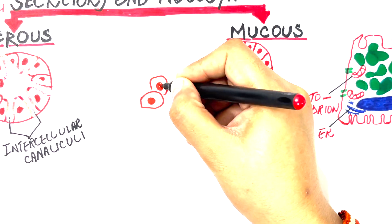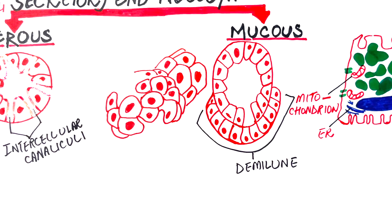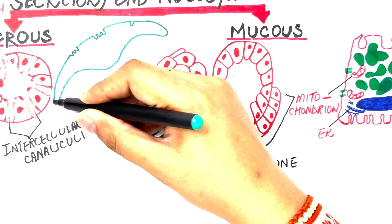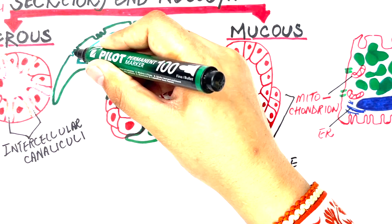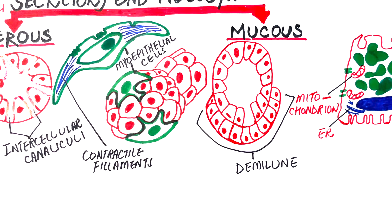Last but not least are the myoepithelial cells — star-shaped contractile cells associated with the secretory end pieces and intercalated ducts of the salivary glands. They possess numerous cytoplasmic extensions that wrap around the acini and intercalated ducts, and are joined to the acinar cells by desmosomes. On closer view, the cells resemble smooth muscle cells. They contain a centrally placed nucleus and numerous contractile filaments, which help in contraction, providing support to the end pieces during active secretion of saliva.